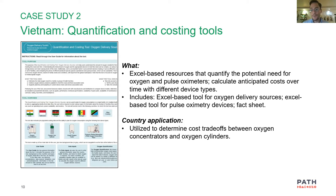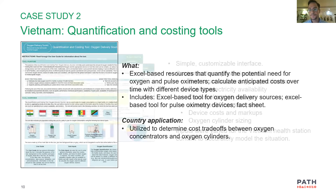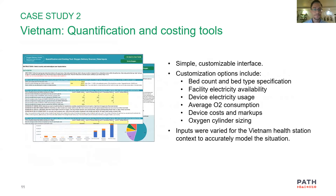Something like an oxygen concentrator is going to cost you more money today than an oxygen cylinder, but if you look at the four-year lifespan of a concentrator and expect to use it a decent amount, it can be much more cost effective than a cylinder where you have to keep paying for oxygen deliveries. This also gets into distribution issues, and those costs are taken into account with this tool. The tool is also highly customizable.